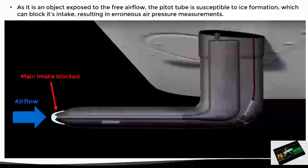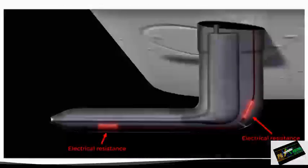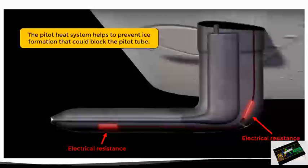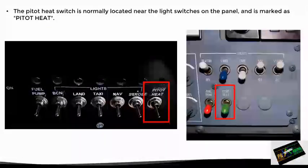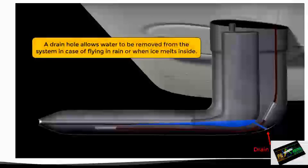However, a problem with this design is that being an object exposed to airflow, it is also susceptible to icing, which can block the main intake hole and thus produce errors in pressure measurement. In order to solve this problem, the pitot tube incorporates a heating system which consists of electrical resistances that, when turned on from the cockpit, make the tube heat up and melt any ice that may clog the tube. The switch for this heating system is usually marked as pitot heat and is located near the light switches. Another component of the pitot tube is the drain hole — a small hole in the back of the tube that allows water to be removed from the system in case of flying in rainy conditions or when melting ice using the pitot heat.